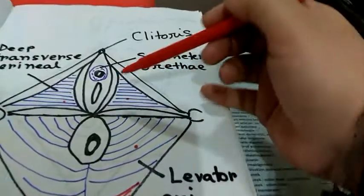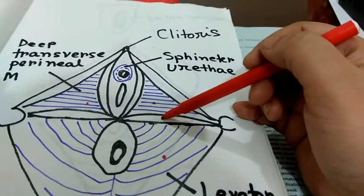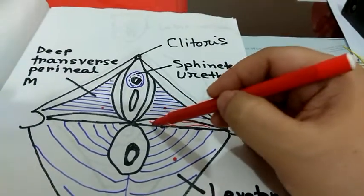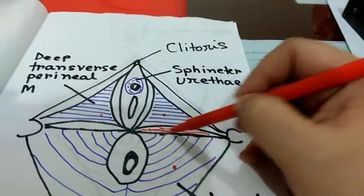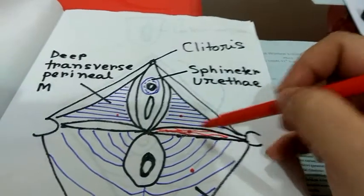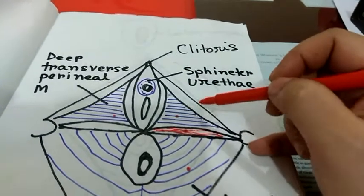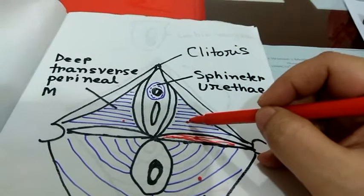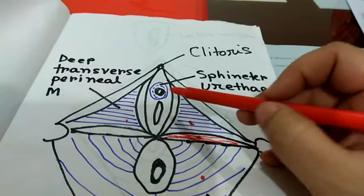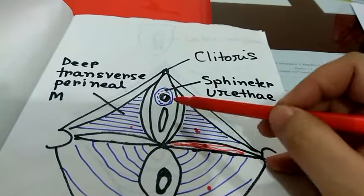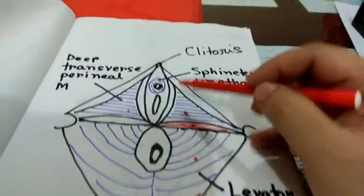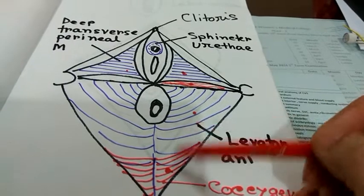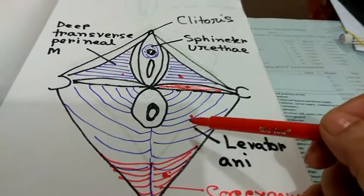To repeat: the muscles of the perineum — the superficial transverse perineum runs transversely, the bulbospongiosus, the deep transverse perineum, and the sphincter urethrae. The deep transverse perineum and sphincter urethrae together form the urogenital diaphragm. In the anal triangle, the levator ani and coccygeus together form the pelvic diaphragm.